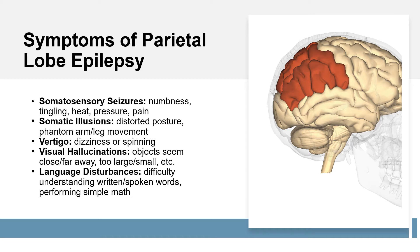Parietal lobe epilepsy can cause somatosensory seizures, in which patients experience numbness, tingling, hot or cold sensations, pressure, and pain in various parts of the body. Somatic illusions are a common symptom that involves the misperception of real external stimuli and can cause one to fear their own body. Distortion of posture, phantom limb movement, and unreal beliefs regarding the body can also take place.